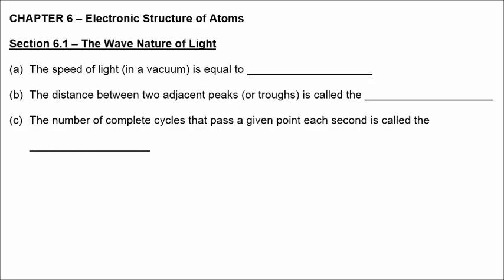The speed of light in a vacuum is equal to 3.00 times 10 to the 8th meters per second. The distance between two adjacent peaks or troughs is called the wavelength, and the number of complete cycles that pass a given point each second is called the frequency.